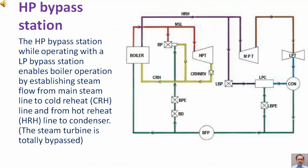HP bypass station. The HP bypass station while operating with the LP bypass station enables boiler operation by establishing steam flow from main steam line to cold reheat line and from hot reheat line to condenser. The steam turbine is totally bypassed.